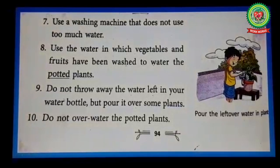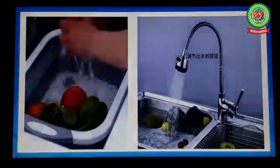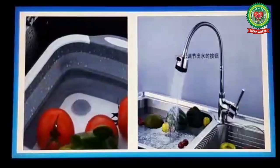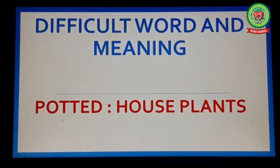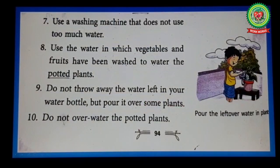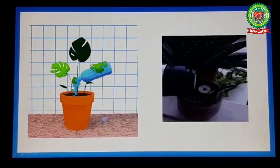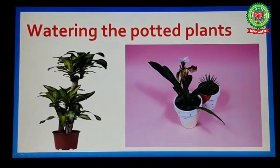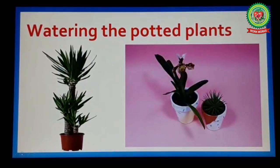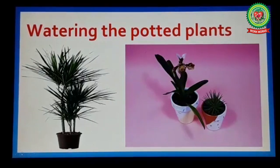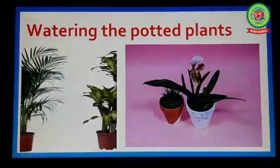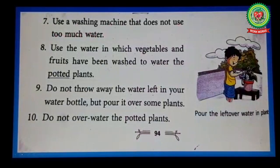Number eight: use the water in which vegetables and fruits have been washed to water the potted plants. Underline the word 'potted' and write its meaning: house plants. Number nine: do not throw away the water left in your water bottle — pour it over some plants. The plants in your house can be watered with leftover water from bottles or water used for washing vegetables and fruits.